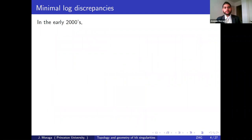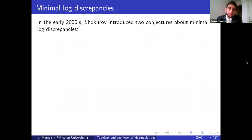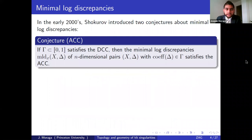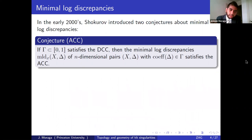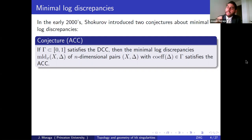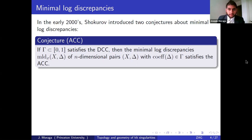In the early 2000s, Shokurov introduced two conjectures about minimal log discrepancies. The first says that if your boundary has coefficients in a DCC set, then the minimal log discrepancies take values in an ACC set. This says that in a fixed dimension, things cannot get less and less singular — they stabilize. They can get more and more singular, but they cannot get less and less singular with respect to this invariant.